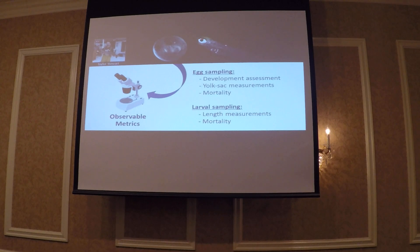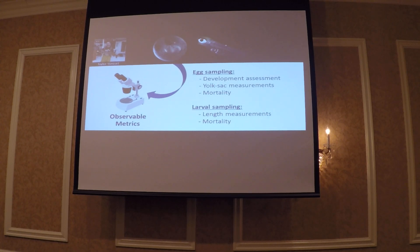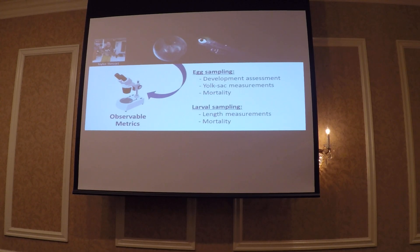To understand development and survival metrics, with the help of graduate student Taylor Stewart, we measured throughout egg development: different developmental assessments, yolk sac measurements were taken weekly, and at the end of the period, overall mortality was assessed. Once the eggs hatched into larvae, they were removed from those light treatments into a consistent photoperiod treatment, since that mimics the ice melt-off and back into a regular cycle. We assessed whether there were any long-term effects on the larvae. After the larvae hatched, length measurements were taken, yolk sac measurements were taken at hatch, and mortality throughout the larval phase was also assessed.